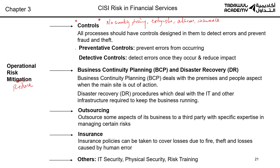These types of controls can be divided into two types: preventative, which help you prevent the fire from happening, and detective, which help you reduce your losses once the risk has happened. In the case of fire, the smoking ban and training employees are preventative controls — put in place to prevent fires from happening. But sometimes fires do happen, so we need detective controls, such as using extinguishers and fire alarms.